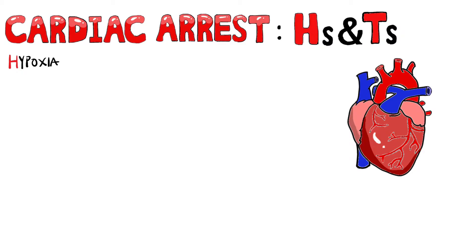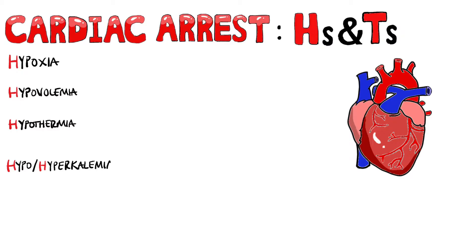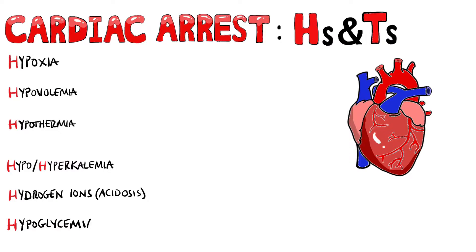The H's include hypoxia, hypovolemia, hypothermia, hyper- or hypokalemia, hydrogen ions — meaning acidosis — and some sources also include hypoglycemia.